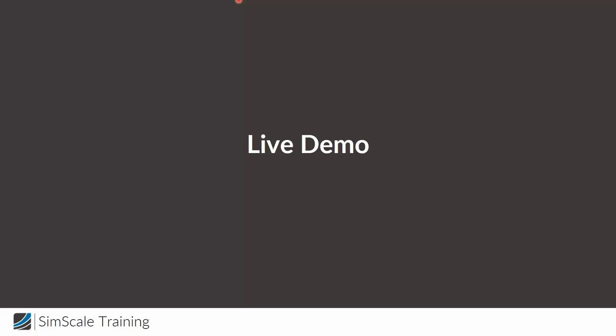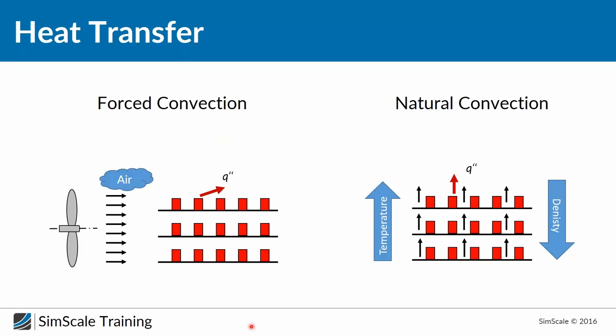Now I'd like to directly start with the live demo, but first I see some questions. The first question is by Yuth, who wants to know what Q represents on the last chart. Q basically is the heat — Q is used in physics and engineering to describe heat.